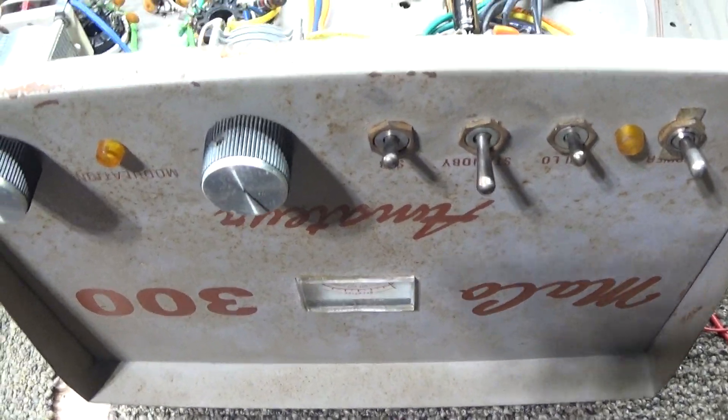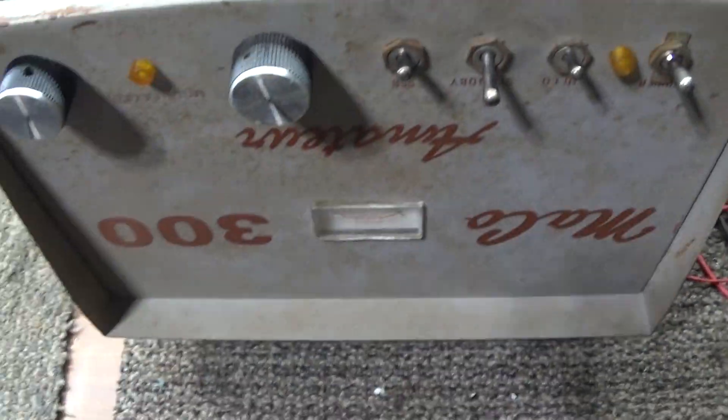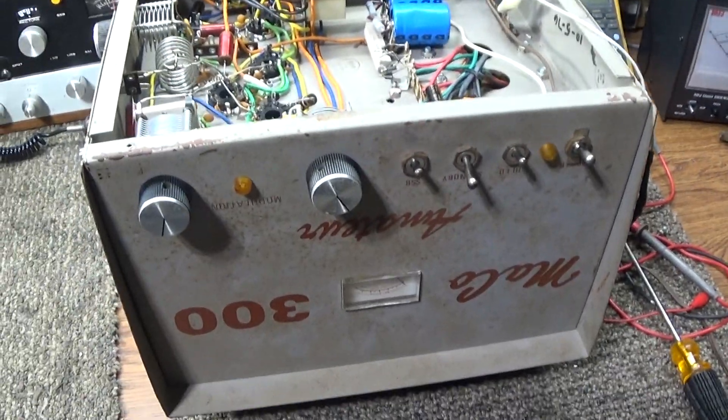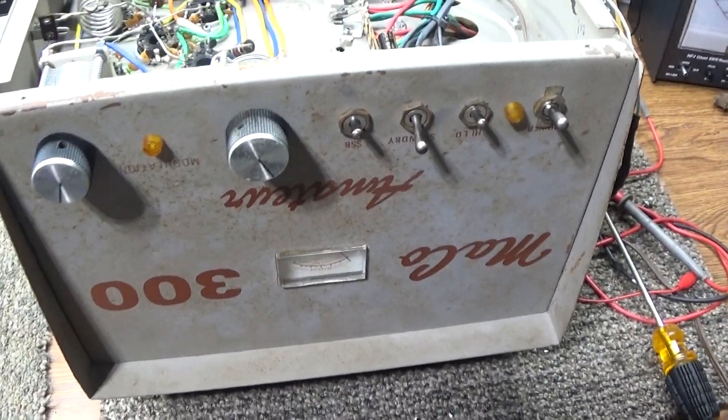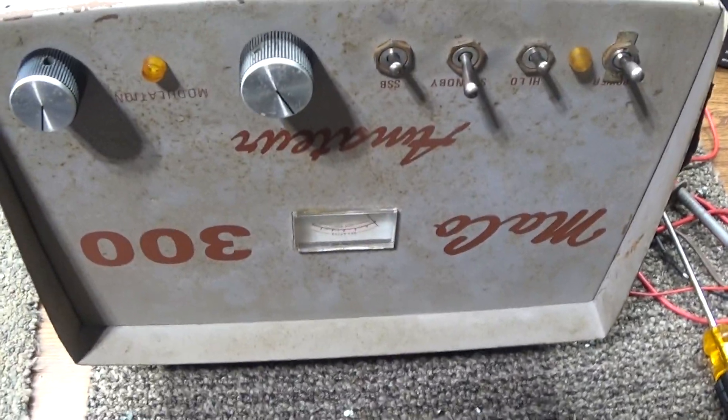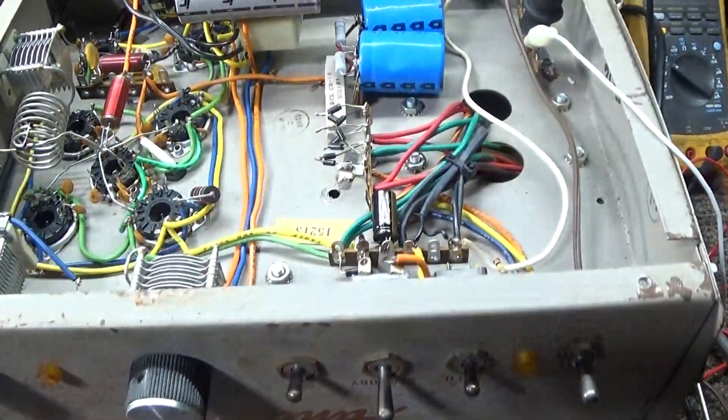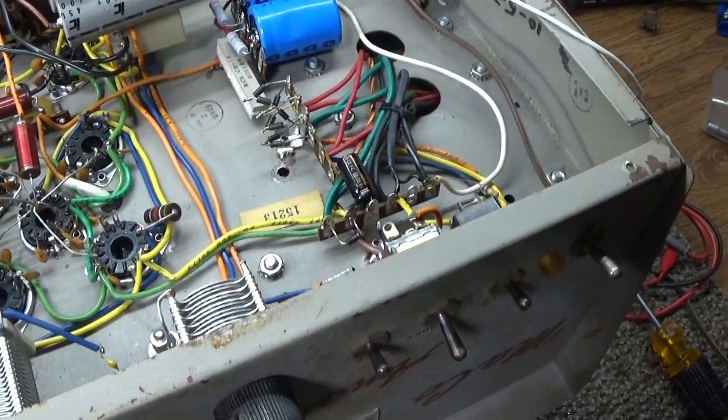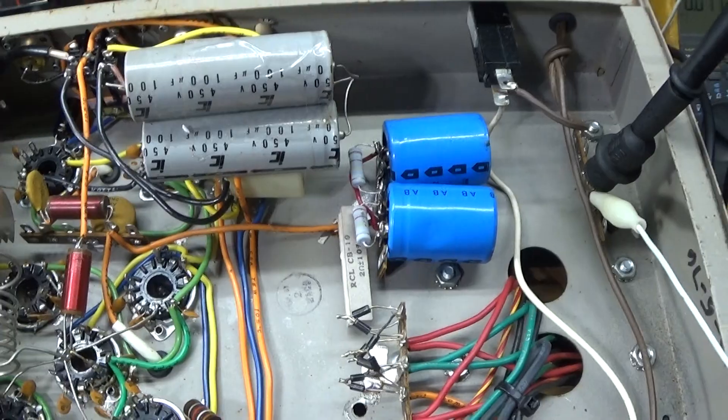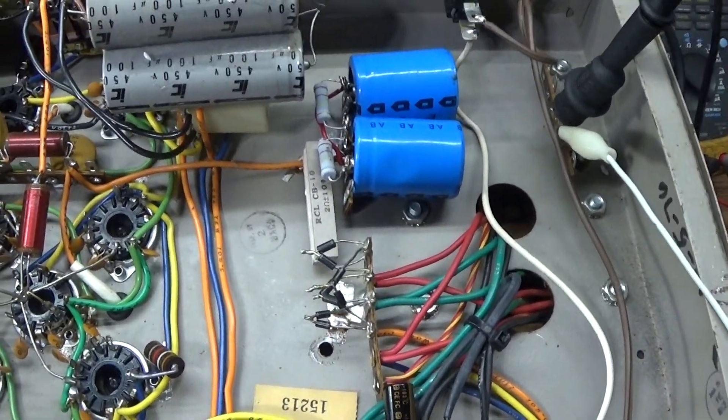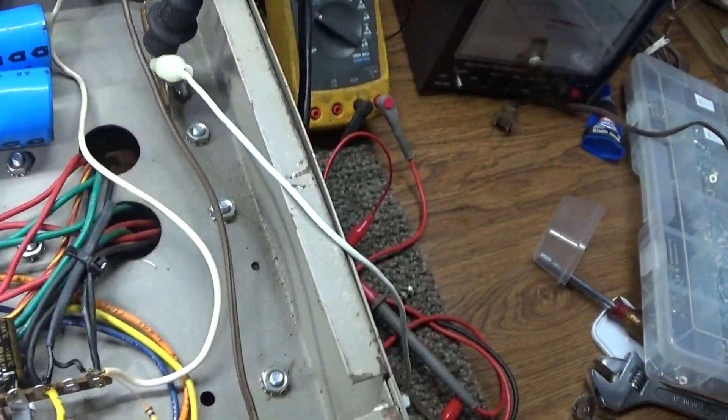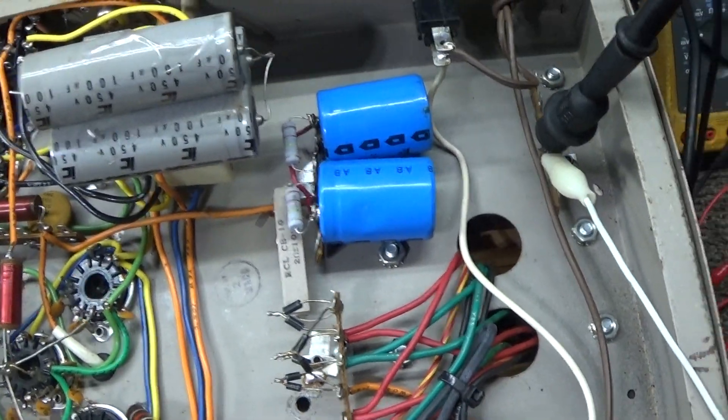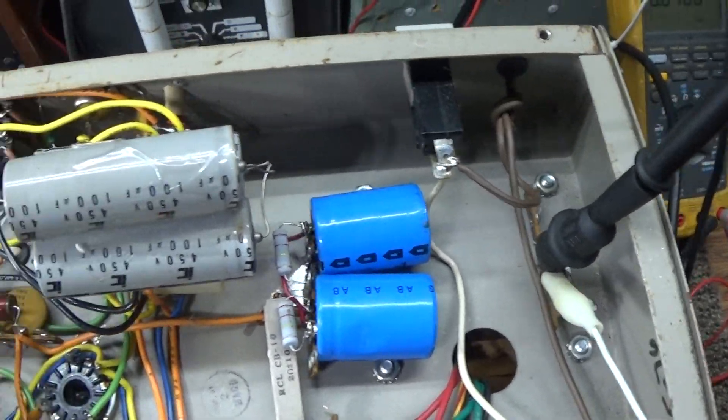Alright, today going to do a quick video and this one is really about bleeder resistors only. The only reason I'm using this Mako 300 is because I was done with it and I was going to button it up. Before I buttoned it up I'm like hey this would be a good one to do the bleeders on, you know the covers were already off.